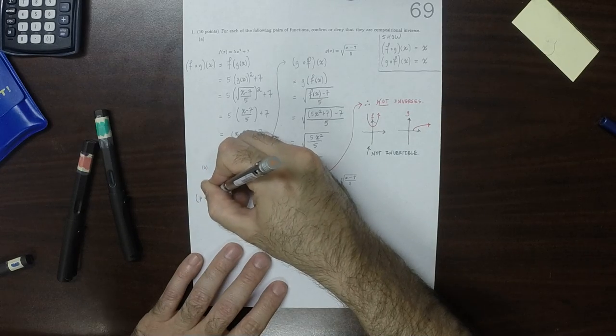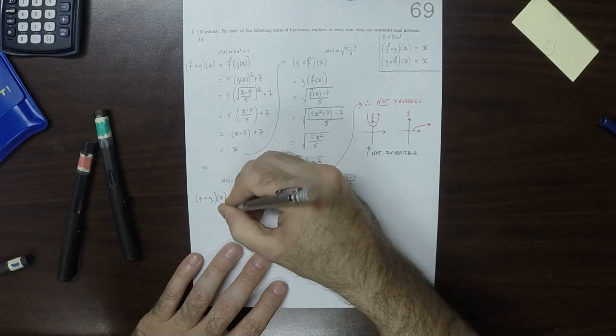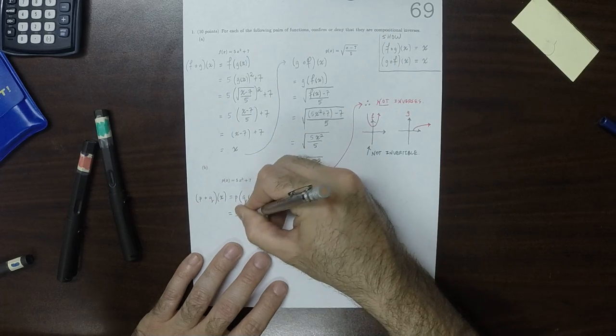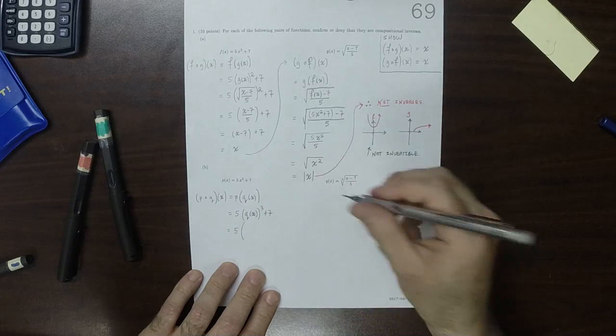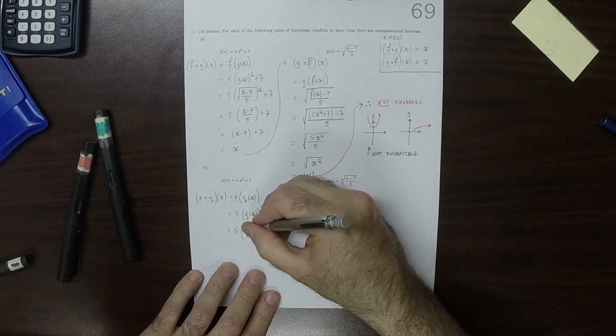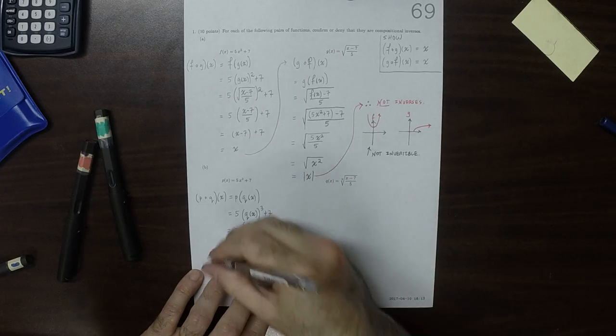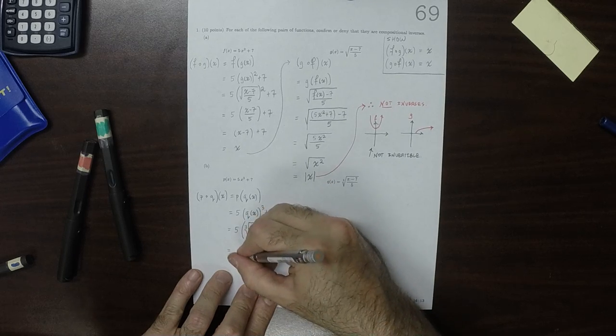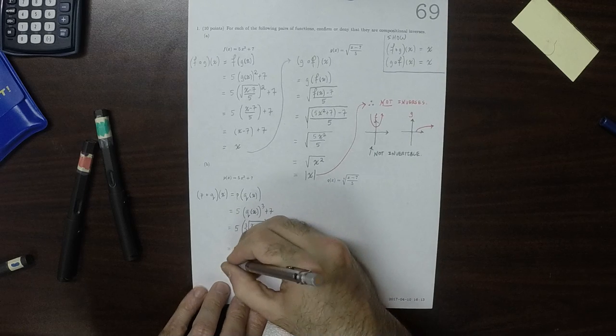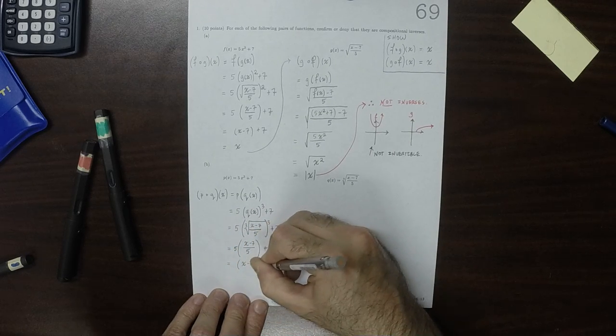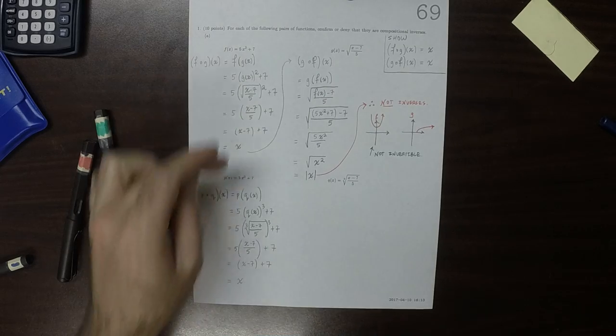if we do p circ q evaluate at x, well that's p evaluated at q of x, which is 5 times q of x cubed plus 7, which is 5 times the cube root of x minus 7 over 5, cube that, plus 7. Well the cube and the cube root cancel. The 5s cancel. The 7s cancel, and you get x. So so far that's just like the one above it.